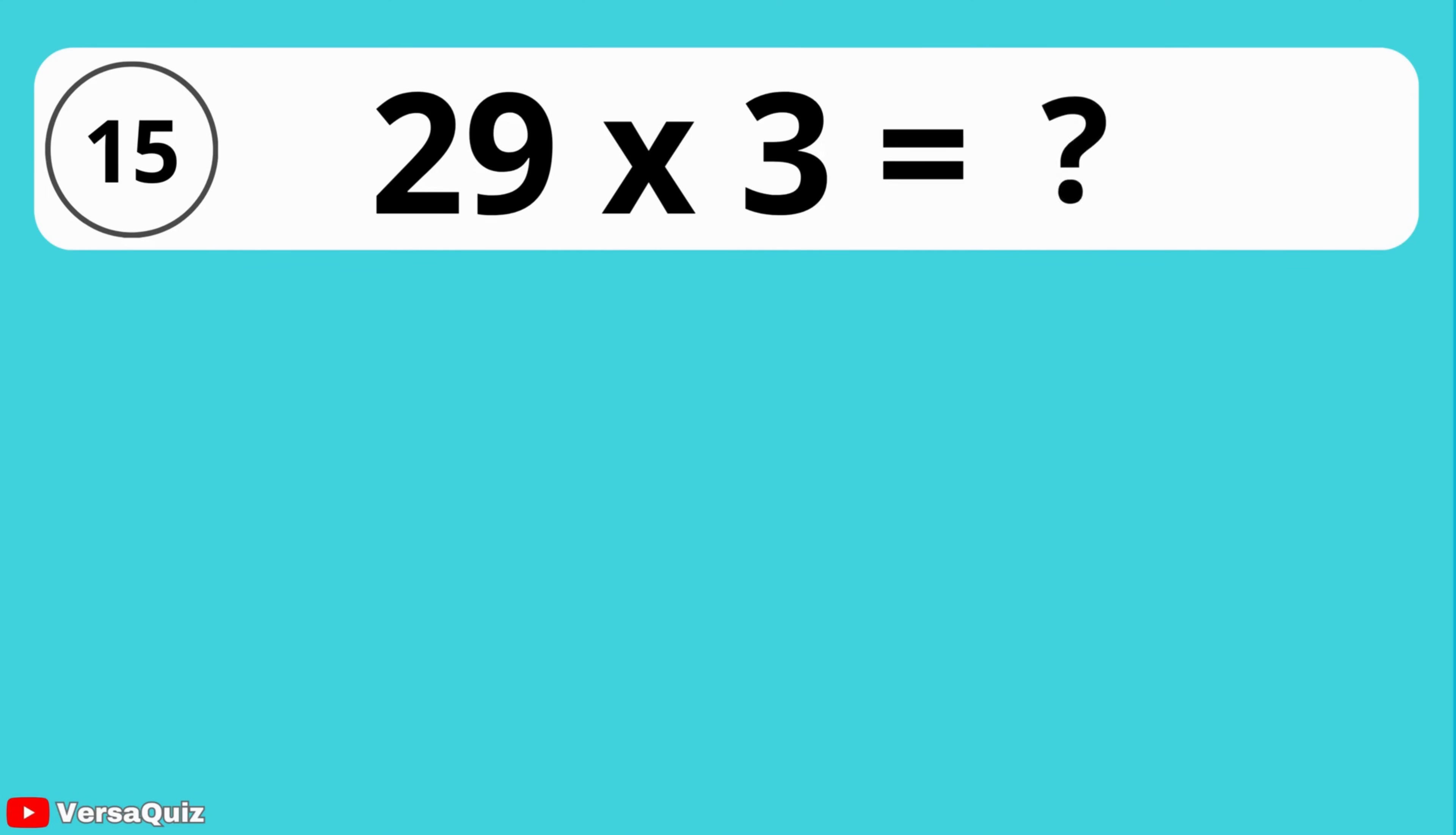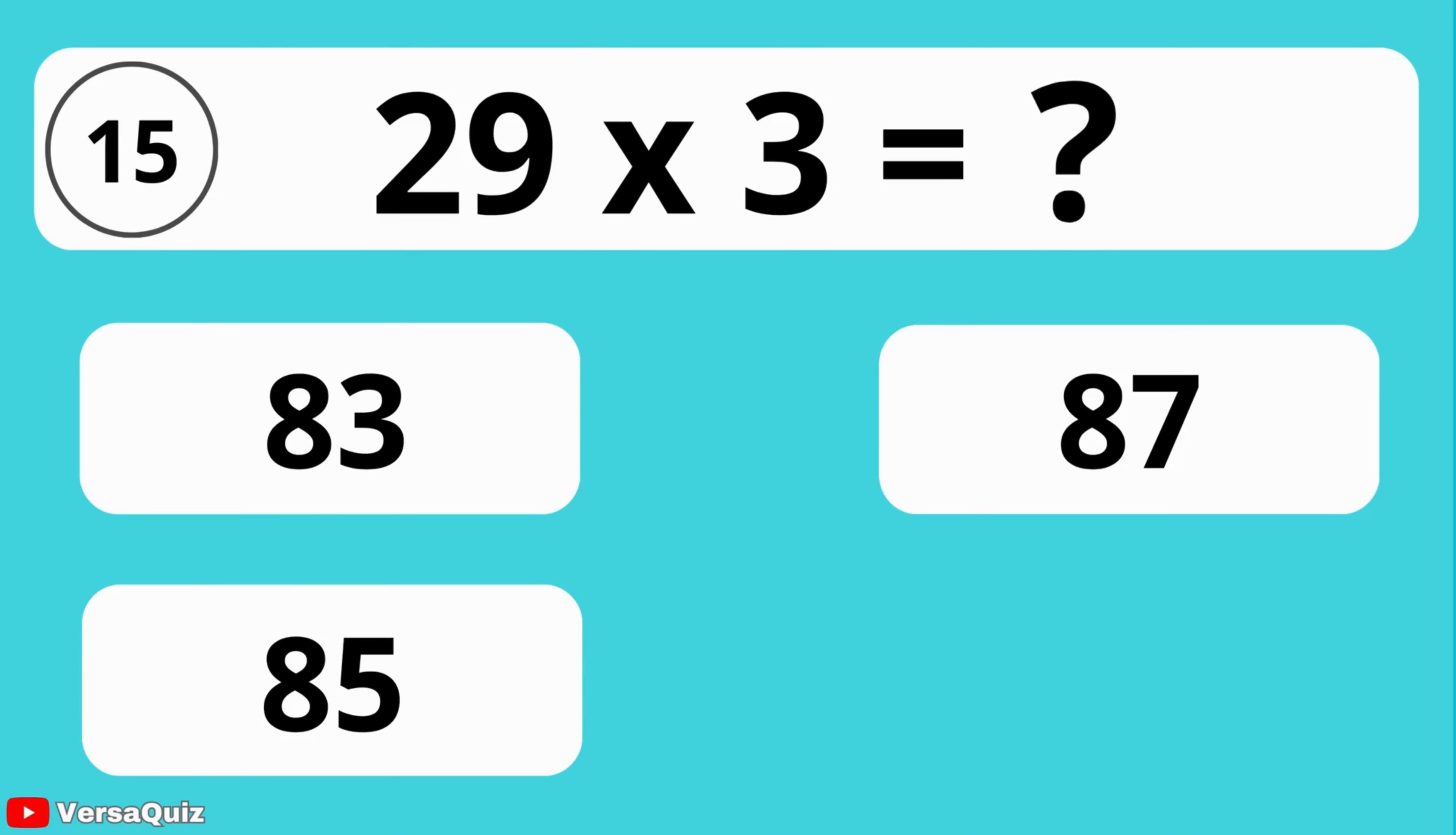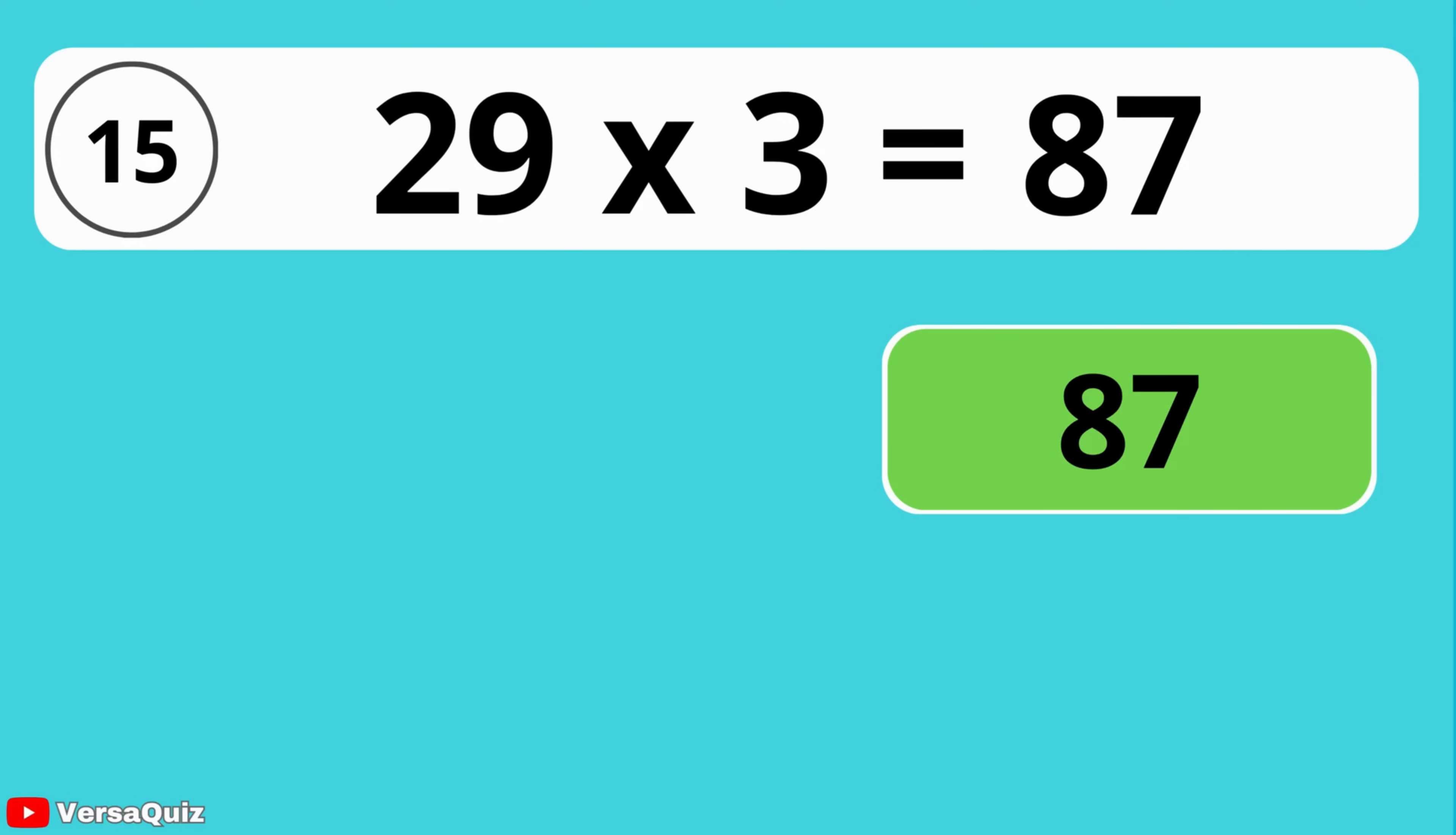What is 29 times 3? 83, 87, 85, or 93? The answer is 87. 29 times 3 is equal to 87.